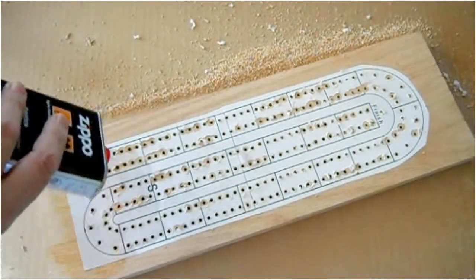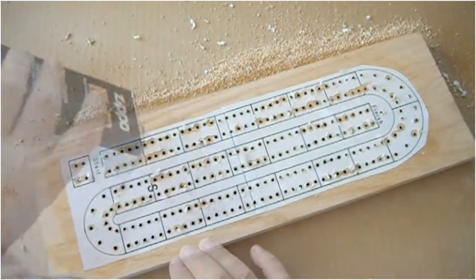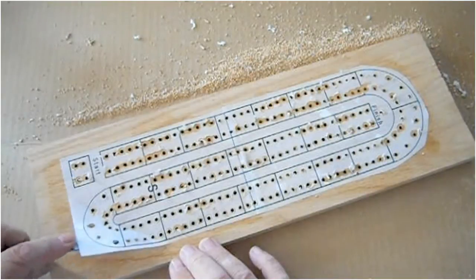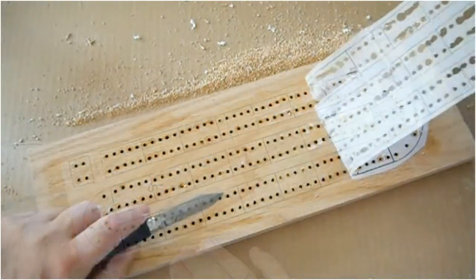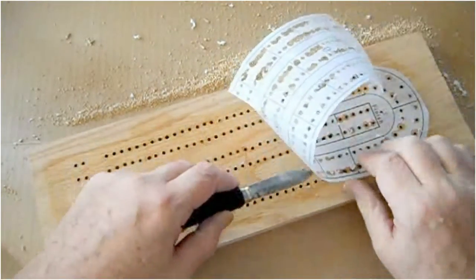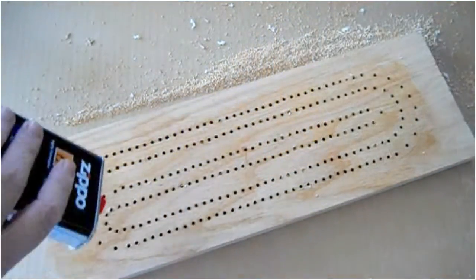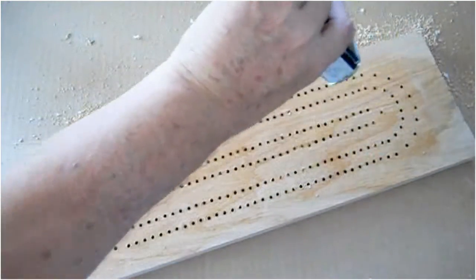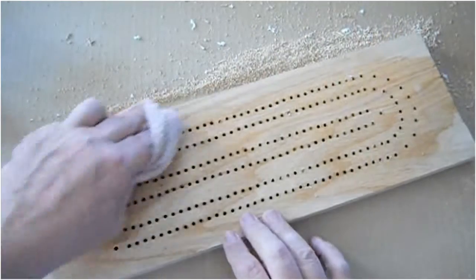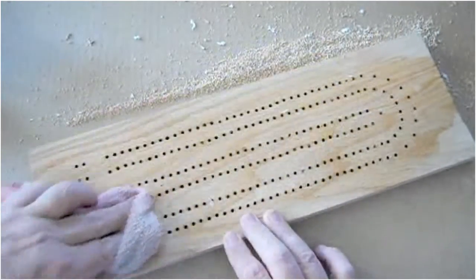Now, after all the holes are drilled, you'll want to remove the template. I've found lighter fluid works the best for removing cement. Squirt on a generous amount of fluid all over the template, and work the paper up with a knife. Add more lighter fluid to the wood, and rub the cement off with a rag.